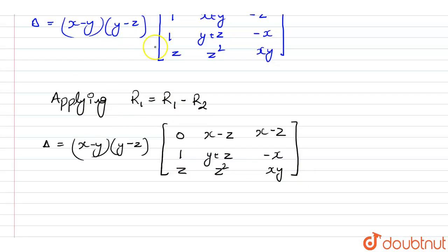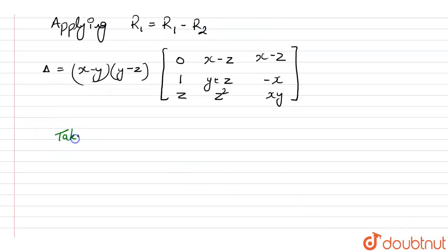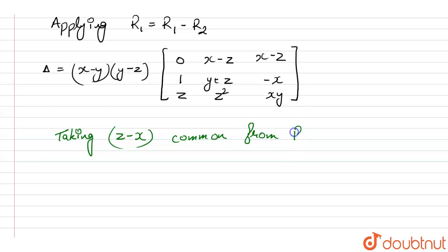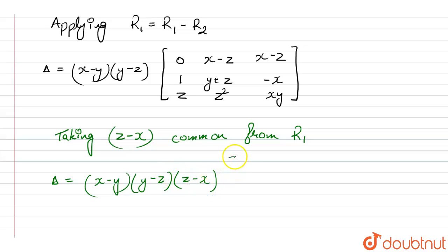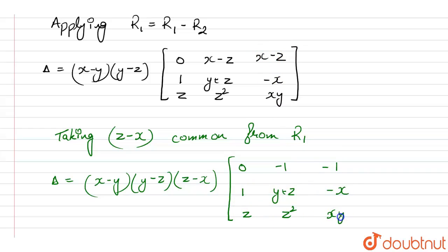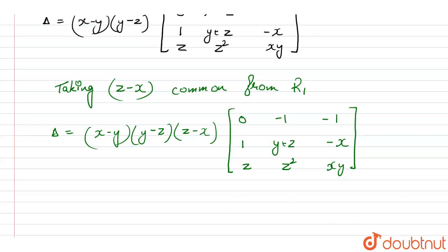Now we take (z−x) common from row 1. The determinant becomes (x−y)(y−z)(z−x) times a matrix where row 1 is: 0, −1, −1; row 2 is: 1, y+z, −x; and row 3 is: z, z², xy.